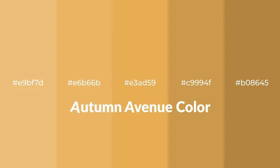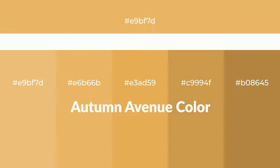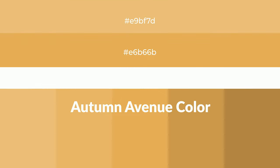Warm shades of Autumn Avenue color with yellow hue for your next project. To generate tints of a color, we add white to the color. Tints create light and exquisite emotions.